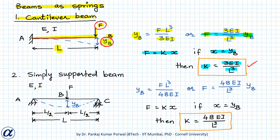Similarly, for a simply supported beam where force F acts perpendicular to the beam at mid-span, the mid-span displacement yb is given by F·L³ over 48EI. Comparing with F equals k·x, we get k equals 48EI over L³. Again, note that force F acts at mid-span and the displacement considered is that of mid-span.